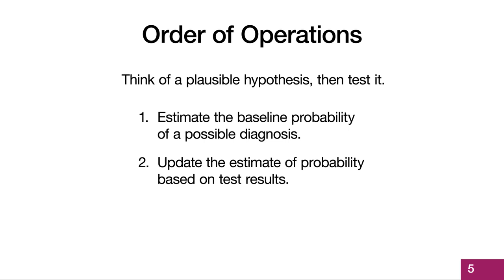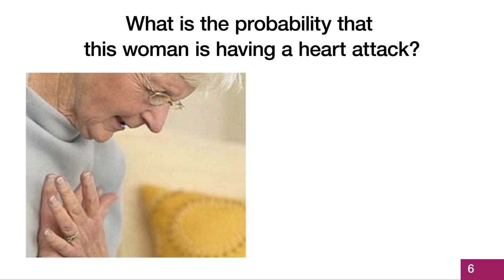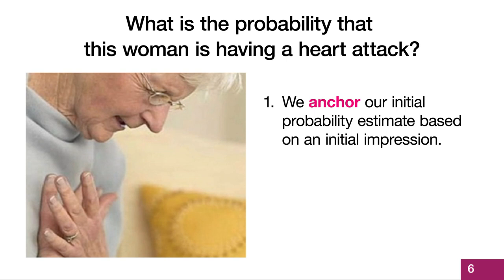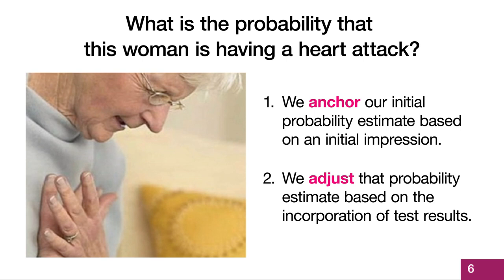Cognitive psychologists tell us that decision makers do this intuitively using a rapid implicit mental habit or heuristic called anchoring and adjusting. So what is the probability, or our degree of belief, that this woman is having a heart attack? We set an anchor for an initial probability estimate based on initial impression. Then we adjust our probability estimate based on the incorporation of test results to come up with an estimate of post-test probability.